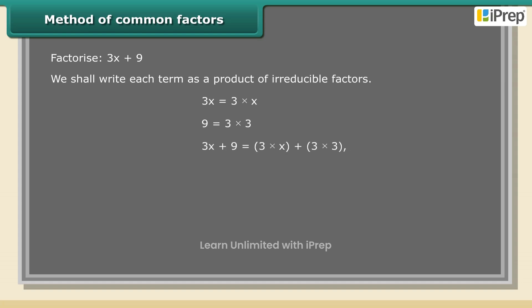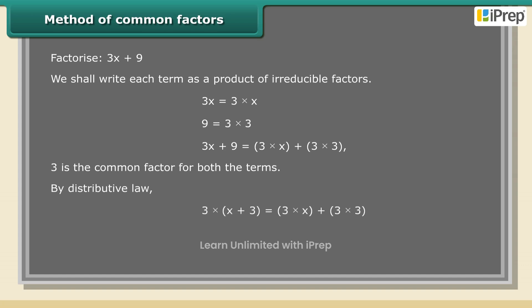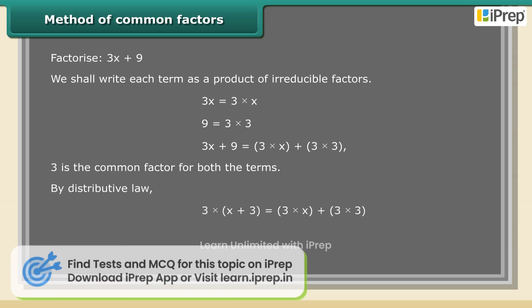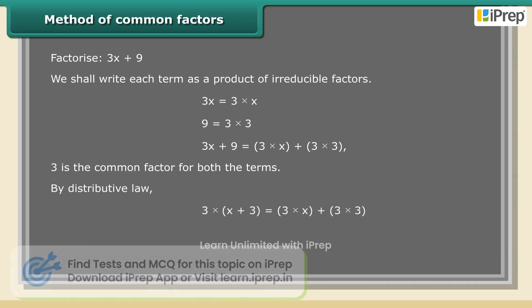3x plus 9 is equal to 3 into x plus 3 into 3. 3 is the common factor for both the terms. By distributive law, 3 into x plus 3 into 3 is equal to 3 into (x plus 3).